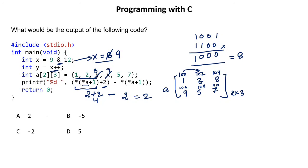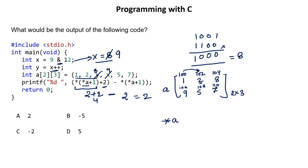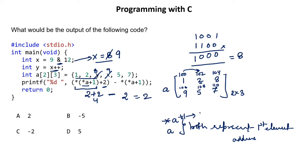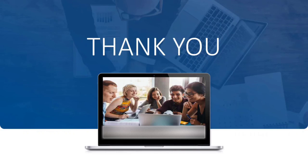So the final answer is 2, which is absolutely correct. To summarize: 'a' and '*a' both represent the address of the first element. Incrementing '*a' moves to the next element in the row, while incrementing 'a' jumps to the next row — all explained in detail in my pointers-with-array video. Thank you so much for watching — please like, subscribe, and share the channel!